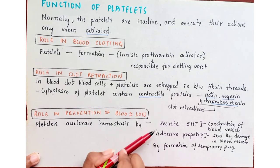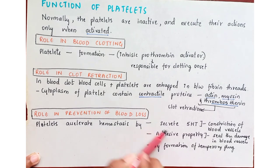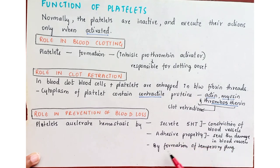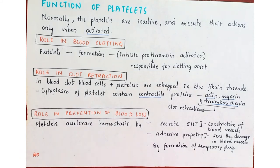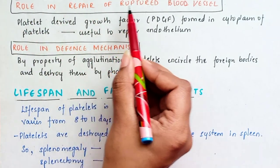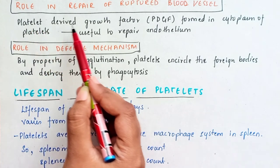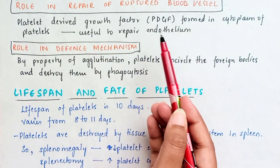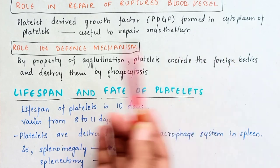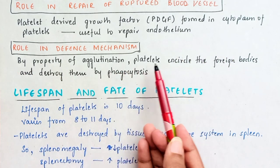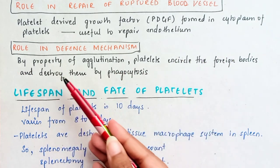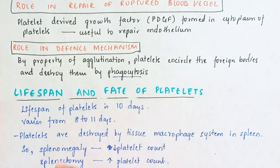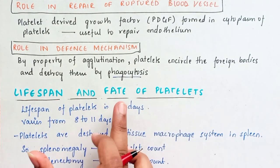Platelets accelerate hemostasis by secreting 5-HT which causes constriction of blood vessels, and through their adhesive property and formation of a temporary plug, helping prevent blood loss. Platelet-derived growth factor formed in the cytoplasm is useful to repair the endothelium of ruptured blood vessels. In defense, by agglutination, platelets encircle foreign bodies and destroy them by phagocytosis.